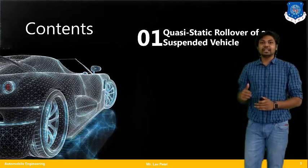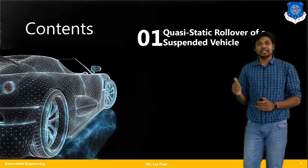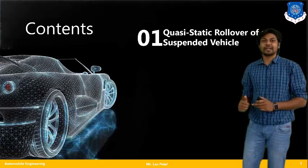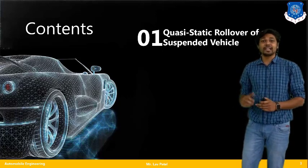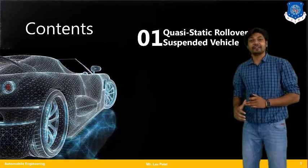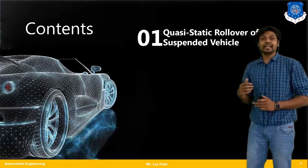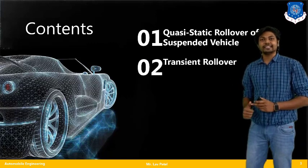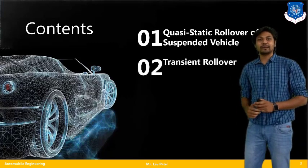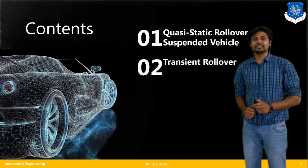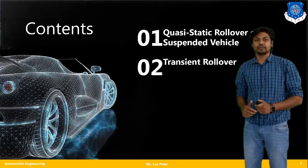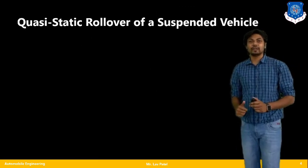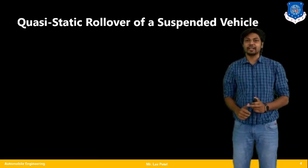In today's lecture we will talk about the first topic, that is quasi-static rollover of a suspended vehicle, in which suspension effects are going to be considered. The second topic is the third type of rollover, that is called transient rollover. So let us begin with the quasi-static rollover of a suspended vehicle.